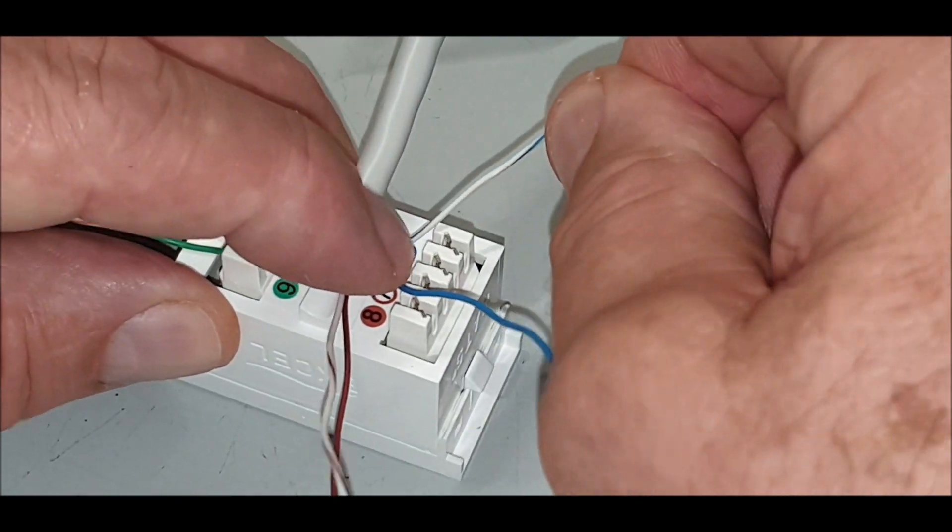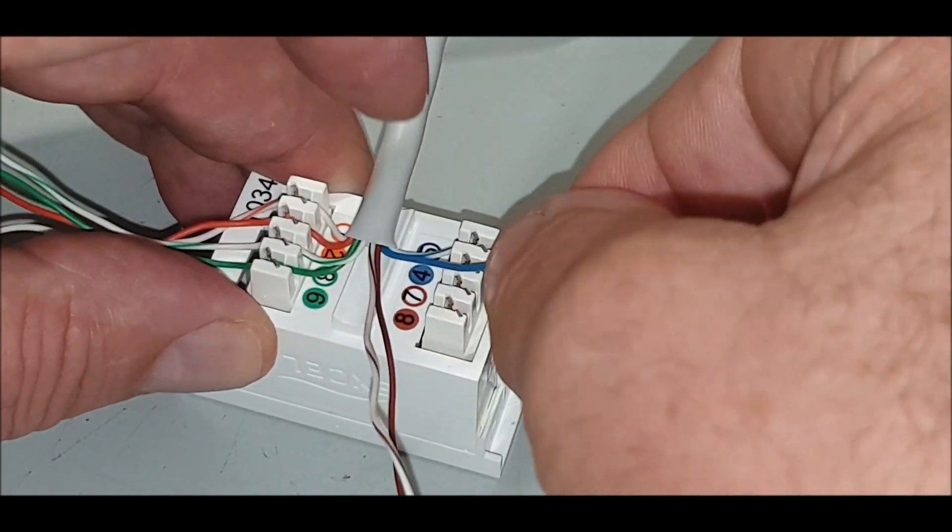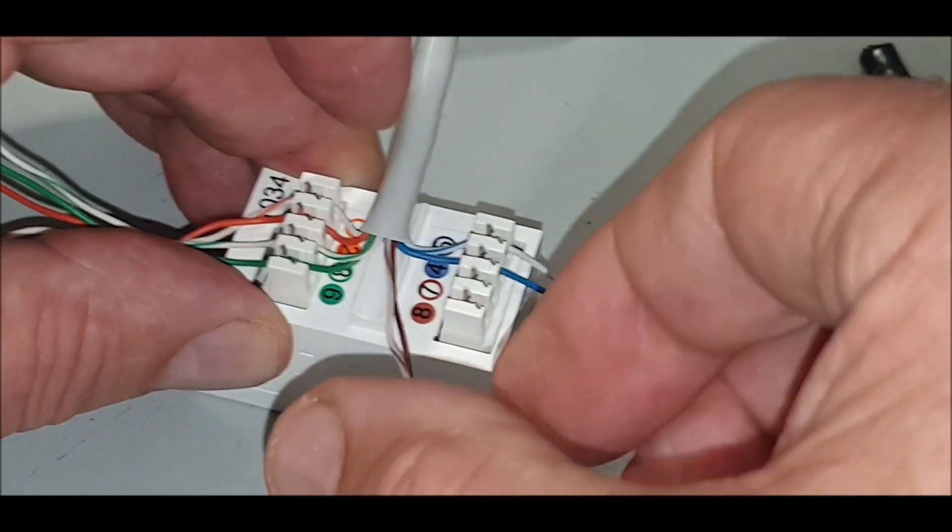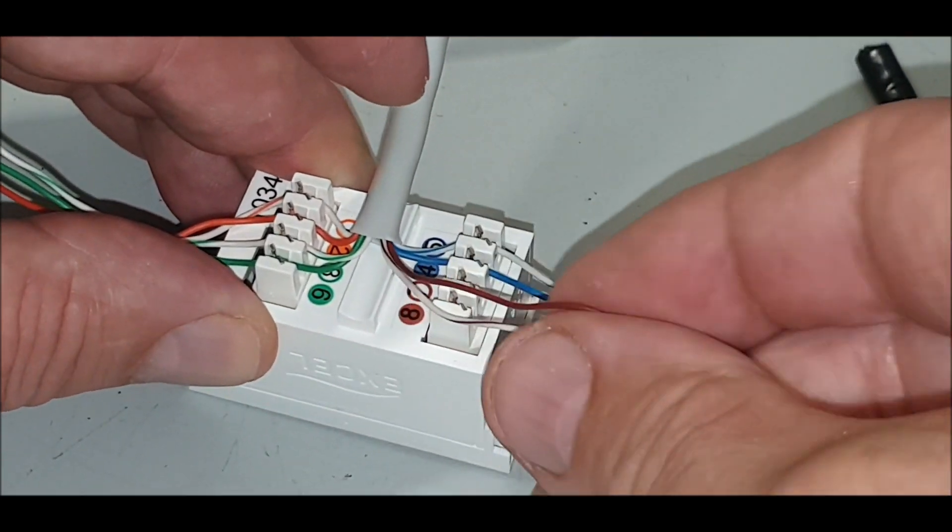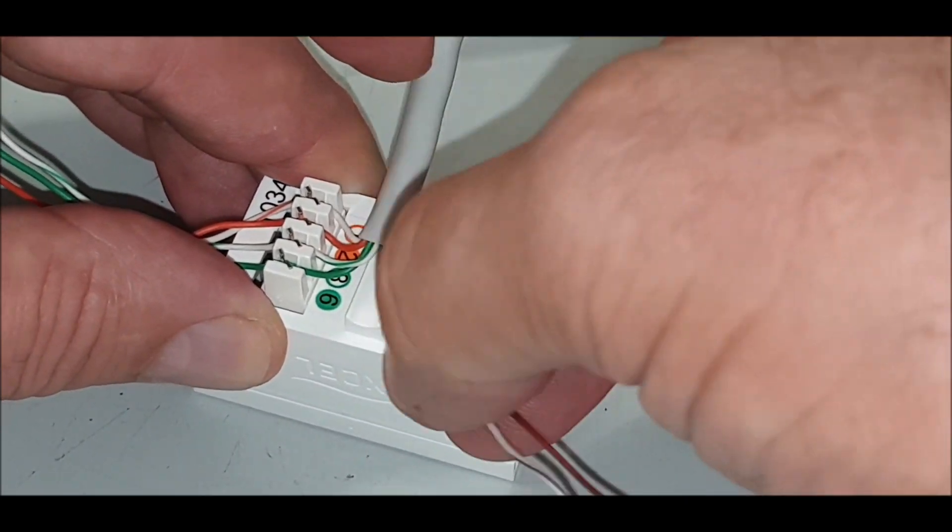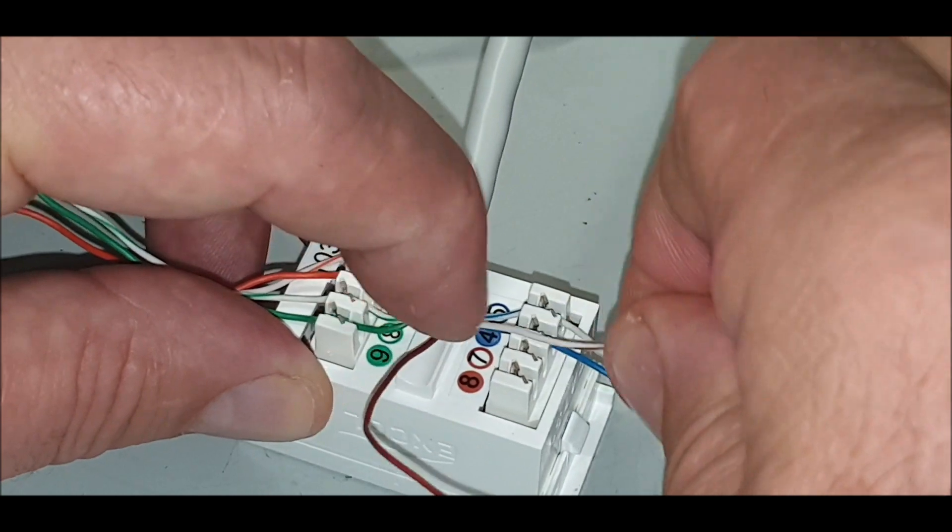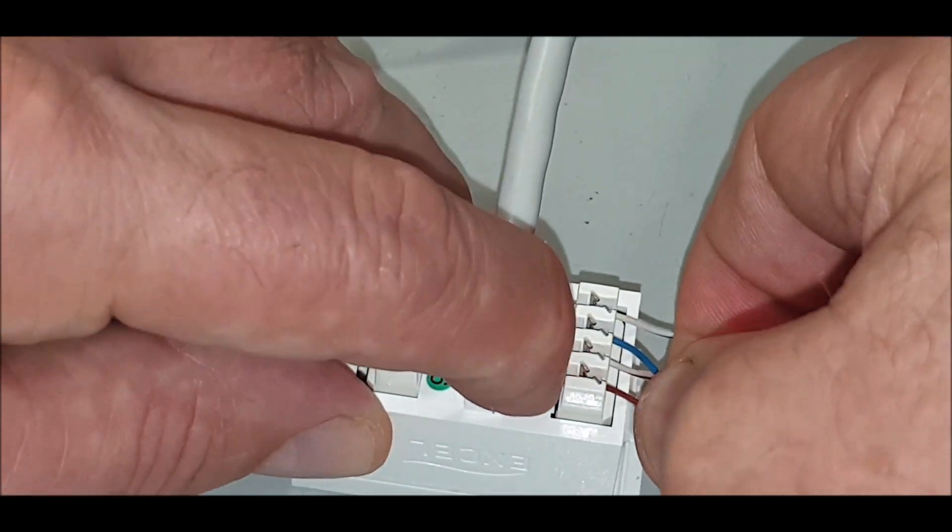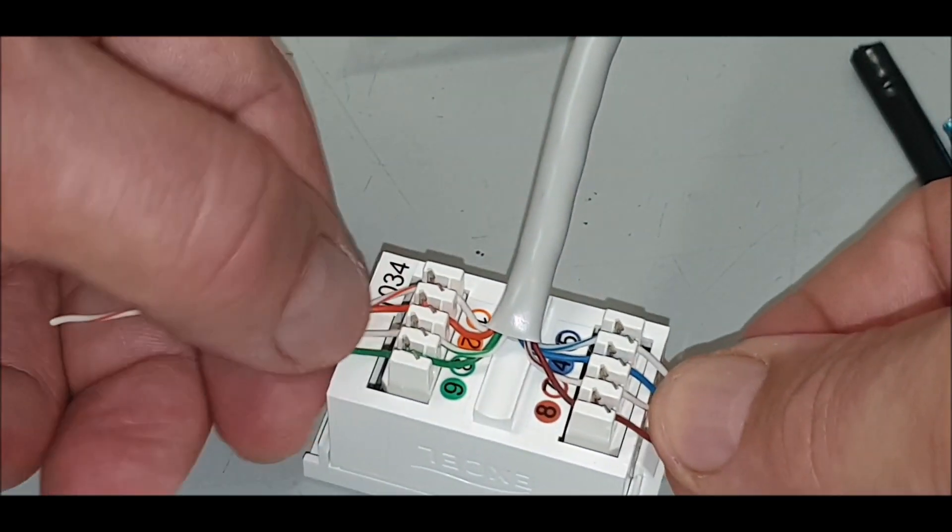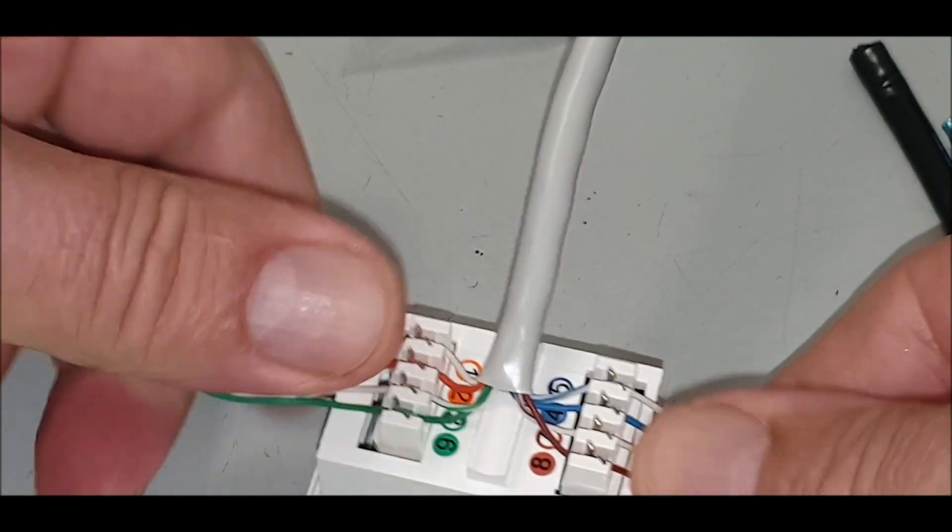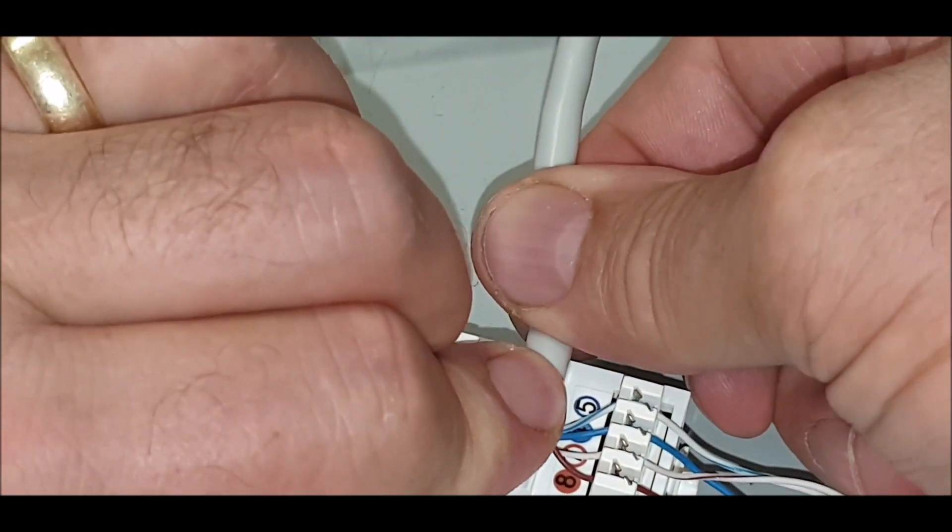Turn it around and then blue and white at the back. This is the way I do it. Then brown and white brown. There we go, so that's what you're aiming for.